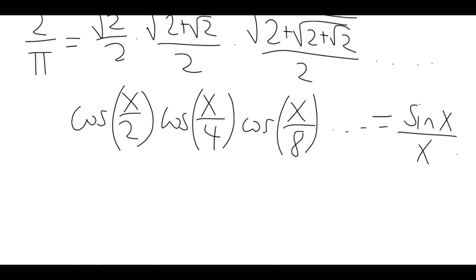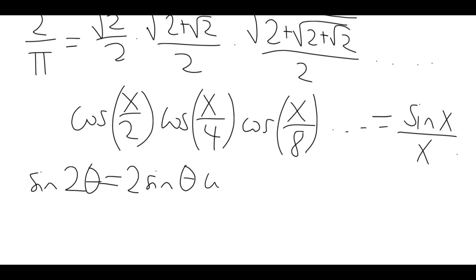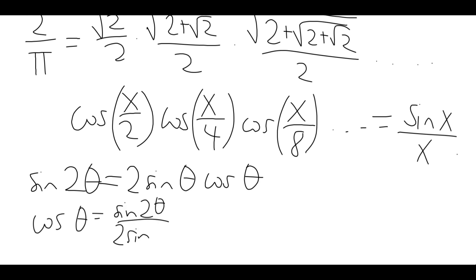To prove this, it really just depends on the formula sine 2θ equals 2 sine θ cosine θ. The trick is to instead write it as cosine θ equals sine 2θ over 2 sine θ.